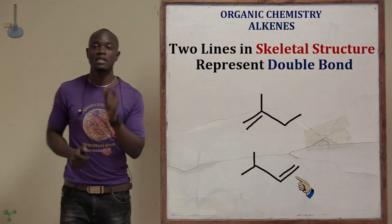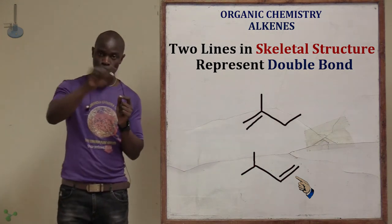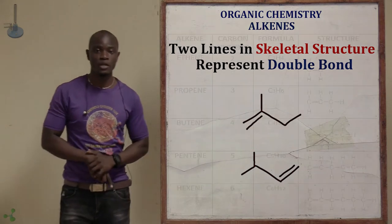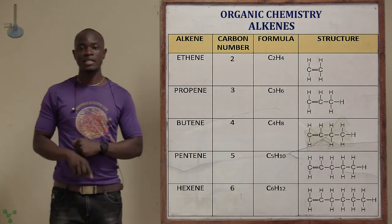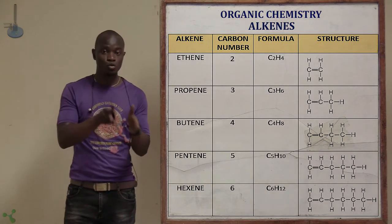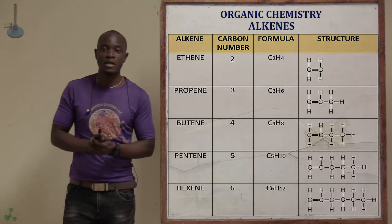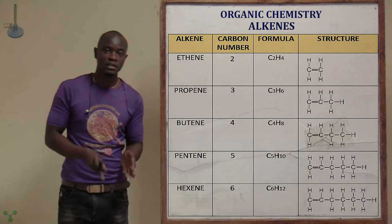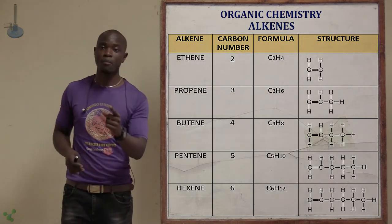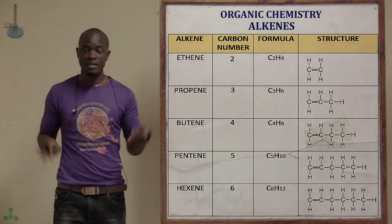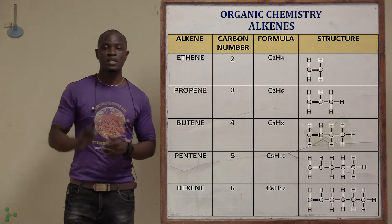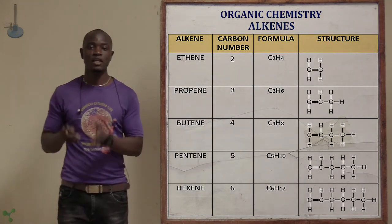To show the double bond in the skeletal structure, draw two lines and continue with the normal zigzag lines. From the table, each alkene differs from the next by the same CH2 unit — for example, the difference between ethene and propene is one carbon and two hydrogens.